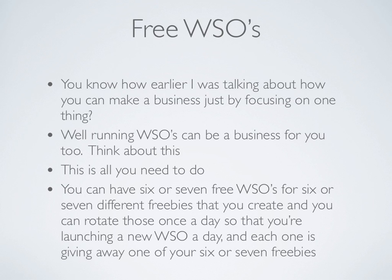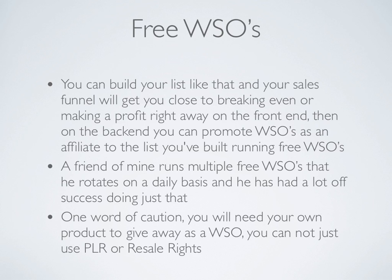Think about this — this really is all you need to do. You want to put together five, six, or seven different free WSOs for six or seven different freebies that you create. You can rotate those once a day so that you're basically launching a new WSO every single day, each giving away one of your different freebies. You can build your list that way, and your sales funnel will get you close to breaking even right away. You might even make a profit on the front end, and on the back end you can promote WSOs as an affiliate to the list you've built.